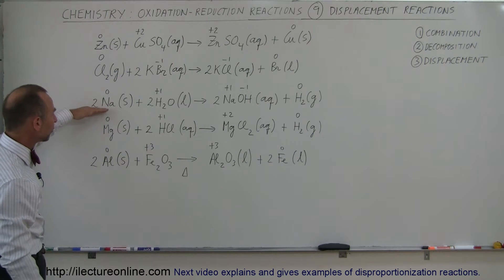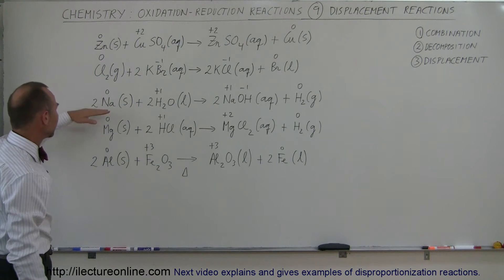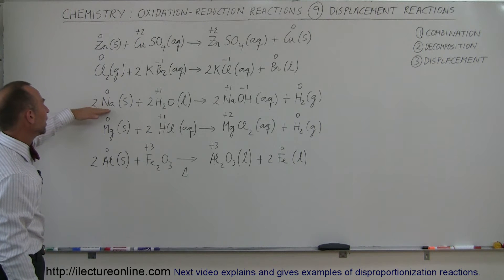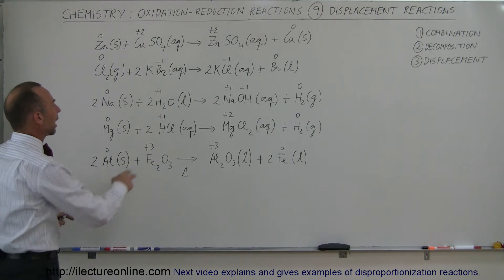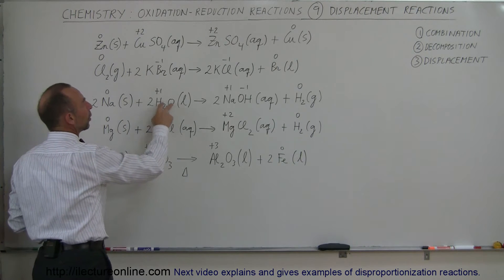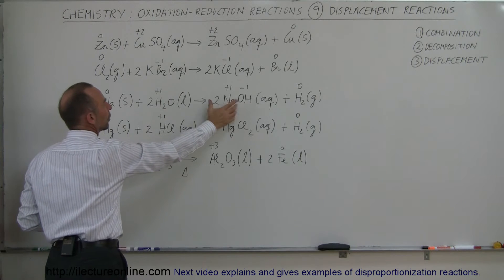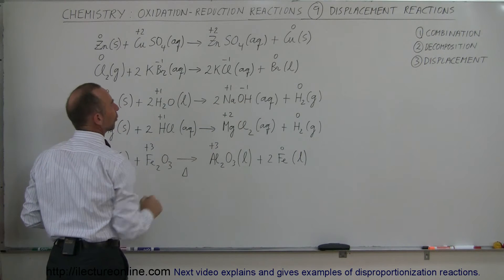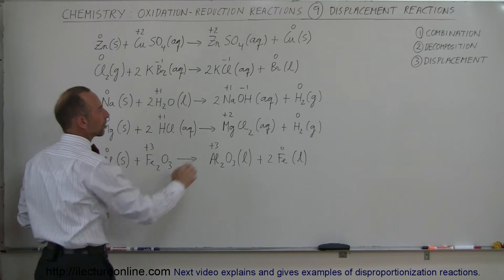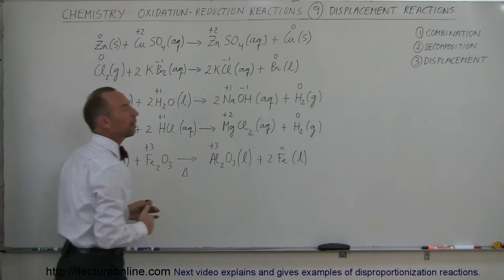Here we have sodium and water. Sodium is very easily oxidized, and so the hydroxide ion from water will oxidize sodium. They will then form sodium hydroxide, and hydrogen gas will come out.